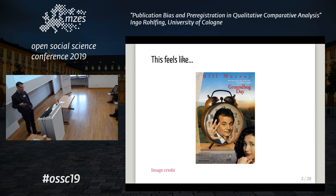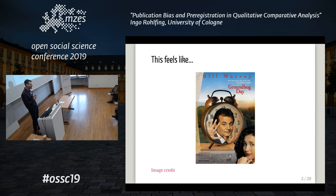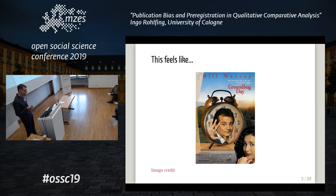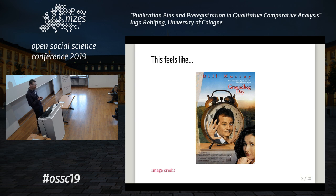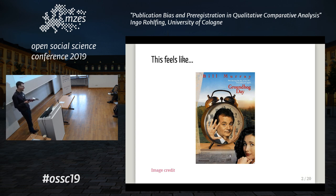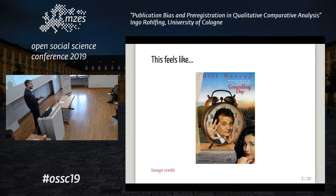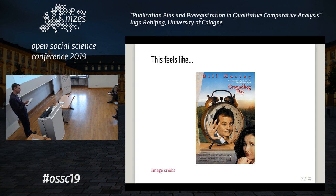Some of you know about publication bias. You know what to do about it. So what's the big news here? I will present evidence showing that there is publication bias in studies using this method. But there's a big 'but' from the QCA methods literature, which may lead you to believe positive results are not a concern because of specific features of QCA. I'll argue we should still care, and then speak about pre-registration and results-blind review as the main measures to reduce publication bias.